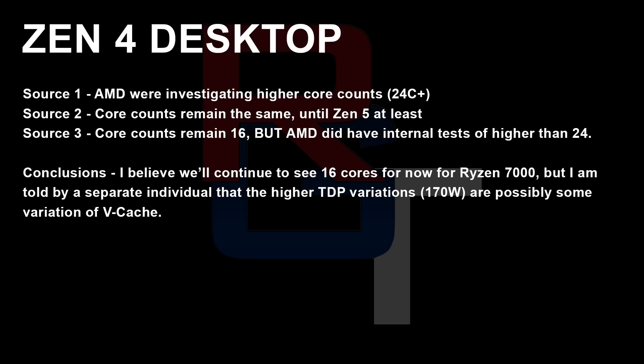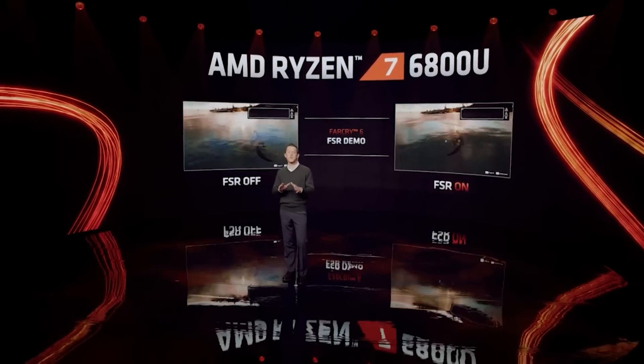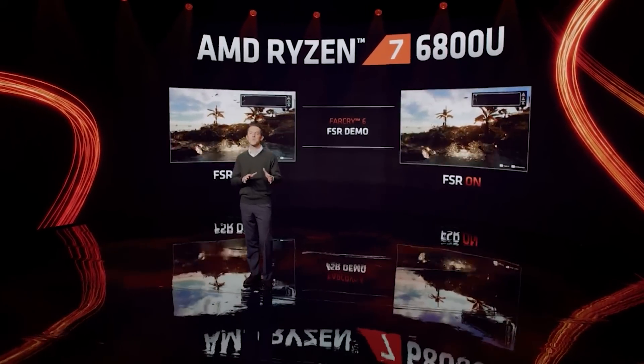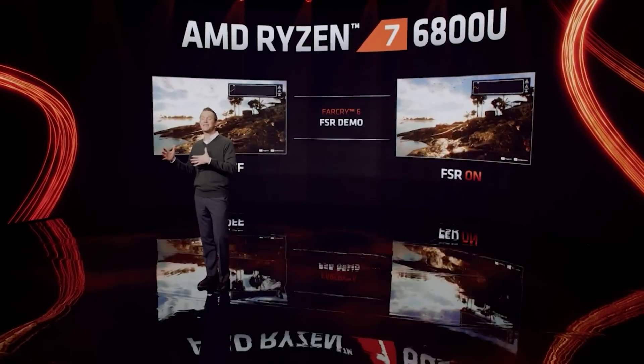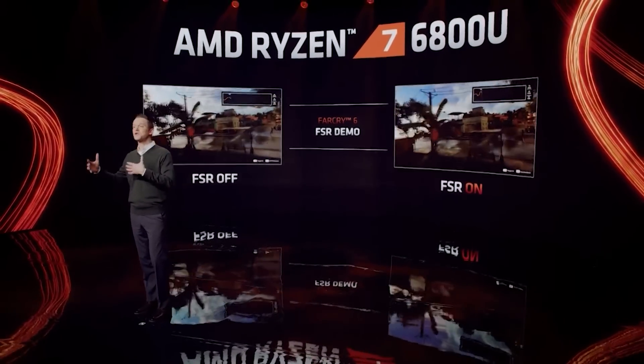For mobile, the core counts will be 16 cores. We've actually seen some public evidence of this already, including benchmarks. It's 16 cores for mobile and that is a large increase. Across the board, I'm told that AMD want to make a huge splash with Zen 4 mobile — they're really going to be hammering down on that.